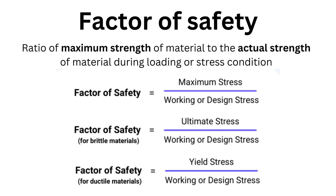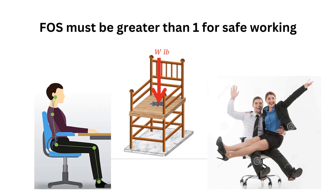So what is meant by factor of safety? In simple words, it is a ratio of the maximum allowable strength of the material to the actual strength of the material when we are subjecting it to a load or any force. It is generally called a safety margin as well.